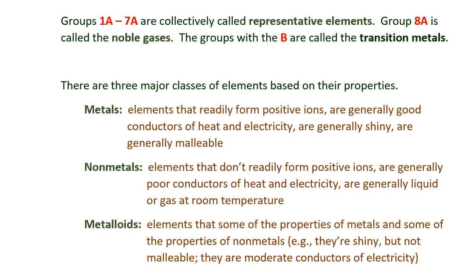There are three major classes of elements, and these classes are based on the properties of the elements. First is metals. These are elements that readily form positive ions, are generally good conductors of heat and electricity, are generally shiny, and are generally malleable. Malleable means that the substance can be squeezed into a flat sheet.